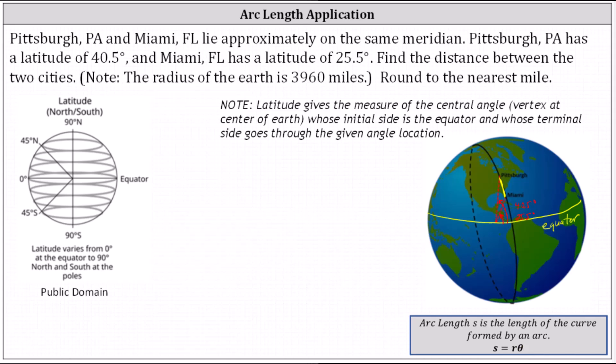We'll begin by determining the angle theta in degrees, which is the difference of the two latitudes. The angle theta equals 40.5 degrees minus 25.5 degrees, which equals 15 degrees. But again, theta does have to be in radians, so now we'll convert 15 degrees to radians.